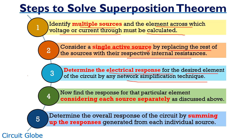Repeat this process for each source present in the network. Once you have the response for each source, sum up all the individual responses to get the overall response of the circuit. By now you should have the basic idea of how to apply superposition theorem.